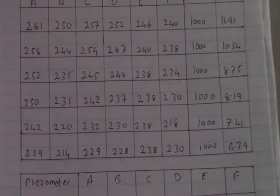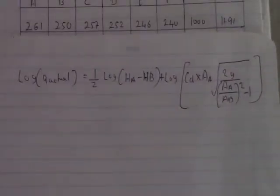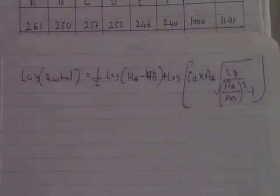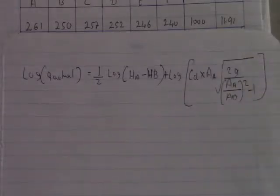The equation for log Q actual is: log Q actual = ½ × log(Ha − Hb) + log of the bracket [Cd × Area_A × √(2g / ((A_A/A_B)² − 1))]. This is the equation we use to calculate log Q actual for each test.